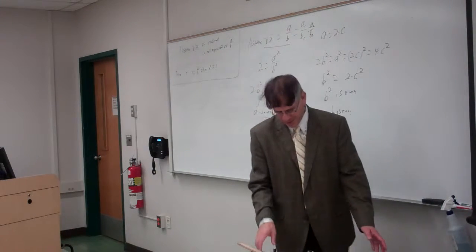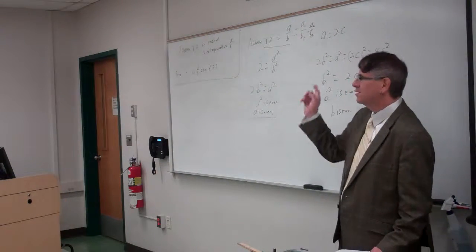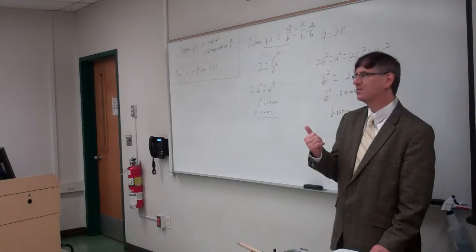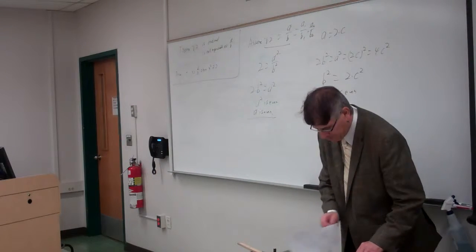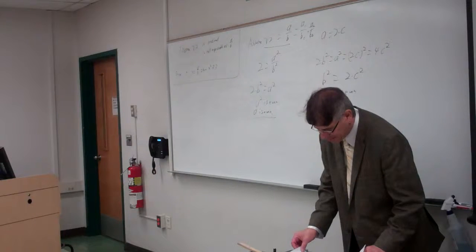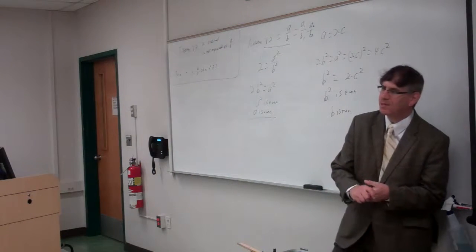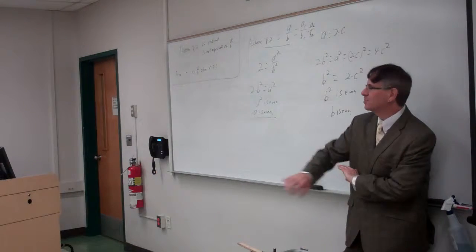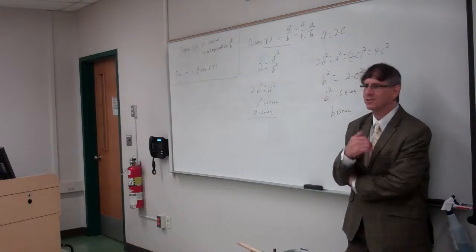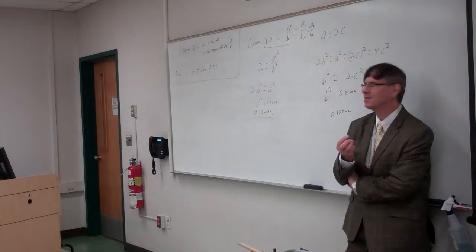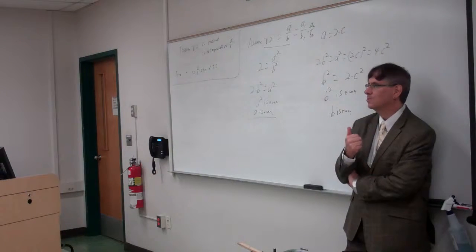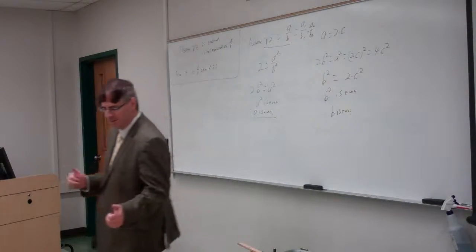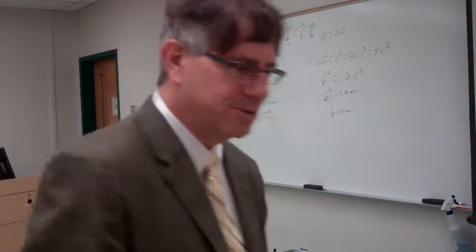We'll spend some time next week going through more examples. Homework two is posted and involves propositional work and some proofs — mostly about odd and even numbers. The book has other examples to prove. On Monday we'll discuss more, then move on to number theory: prime numbers, divisors, ways to find common factors, leading ultimately to cryptography and public key systems.